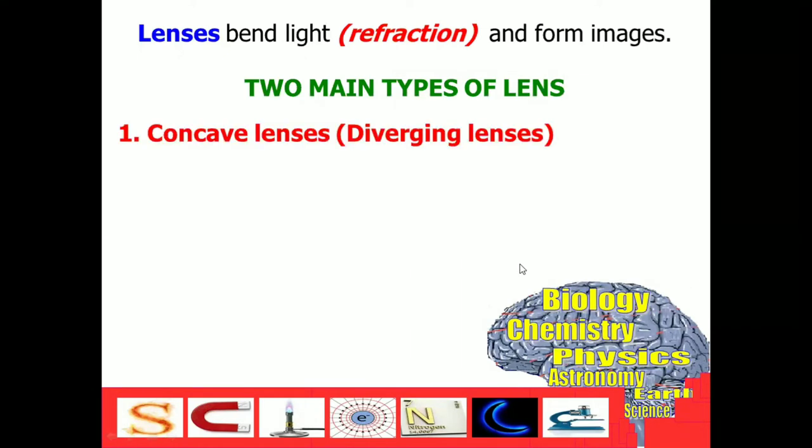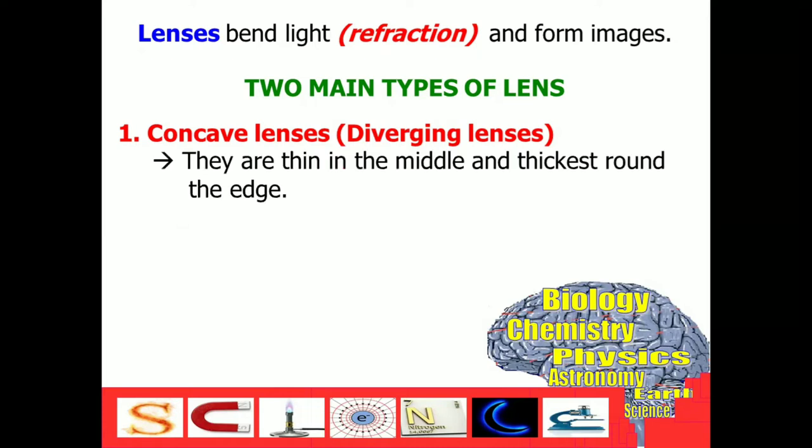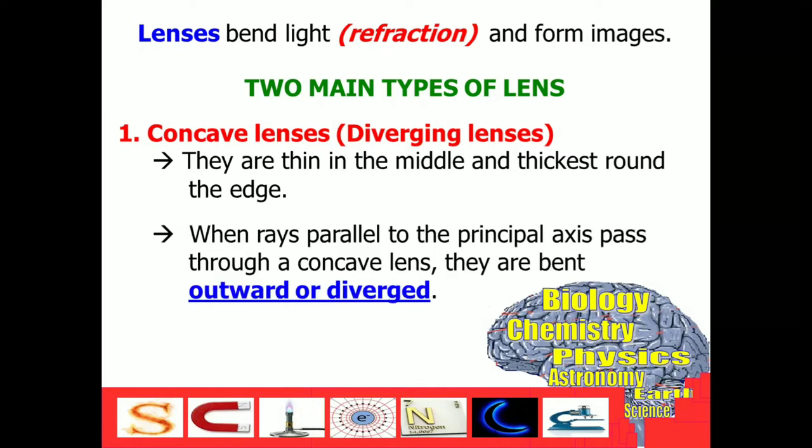The first one is what we call concave lenses, or it is also known as diverging lenses. They are thin in the middle and thickest around the edge. When light rays parallel to the principal axis pass through a concave lens,